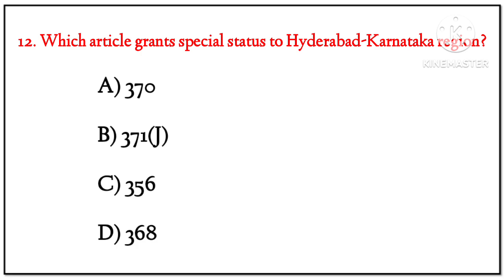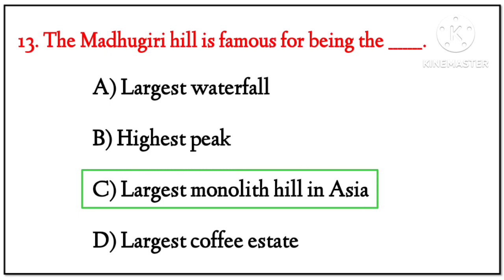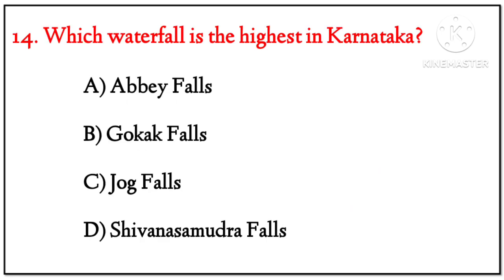Question 12: Which article grants special status to Hyderabad-Karnataka region, also known as Kalyana Karnataka? The correct option is B — Article 371(J). Question 13: The Madhugiri Hill is famous for being the? The correct option is C — the largest monolithic hill in Asia. Question 14: Which waterfall is the highest in Karnataka? The correct option is C — Jog Falls.